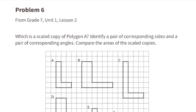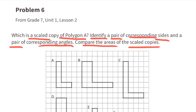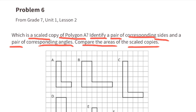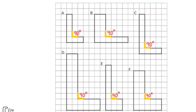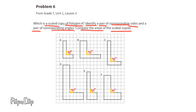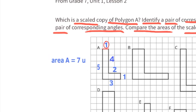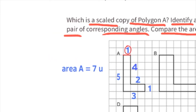Problem number six, from 7th grade Unit 1 Lesson 2: which polygon is a scaled copy of polygon A? Identify a pair of corresponding sides, a pair of corresponding angles, and compare the areas of the scaled copies. First, let's identify the 90-degree angles on all the polygons, then look at the dimensions of polygon A.